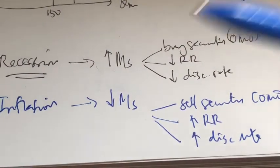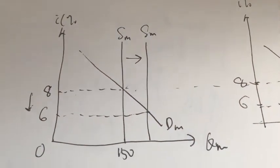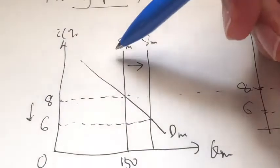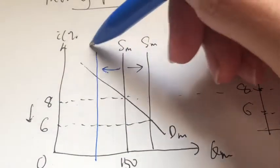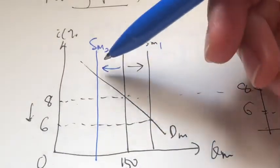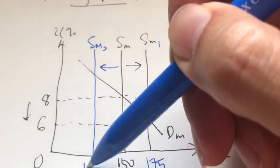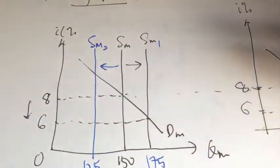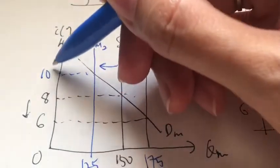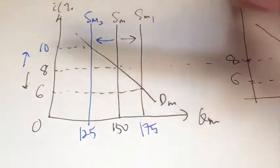Now I'm going to show you what happens when money supply is reduced. Going back to our money market, we have a fall in money supply, so the supply of money curve shifts to the left. We now have a lower quantity of money and we can see we'll have a higher interest rate. When the supply of money falls, our interest rate will increase.